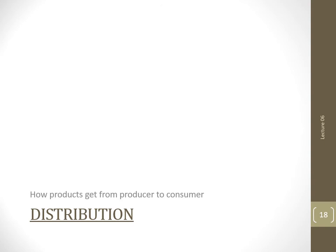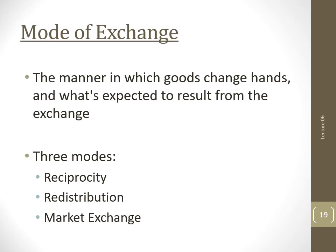Even with a domestic mode of production, where people for the most part produce for their own consumption, not everyone can always produce everything they need. Hunters may have poor luck when hunting; farmers may not have access to a forge for fixing their own plows. So the study of distribution looks at how goods produced by one person make their way to the people who actually use them. The mode of exchange is the manner in which goods change hands and what's expected to result from the exchange. There are three basic modes of exchange: reciprocity, redistribution, and markets.